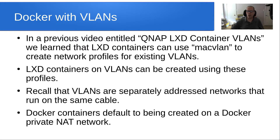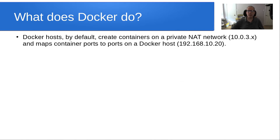Docker containers default to being created on a Docker private NAT network. Docker hosts, by default, create containers on a private NAT network, normally something like a 10.0.3.x, and it maps container ports on that Docker host to the address of the Docker host — as an example, 192.168.10.20.